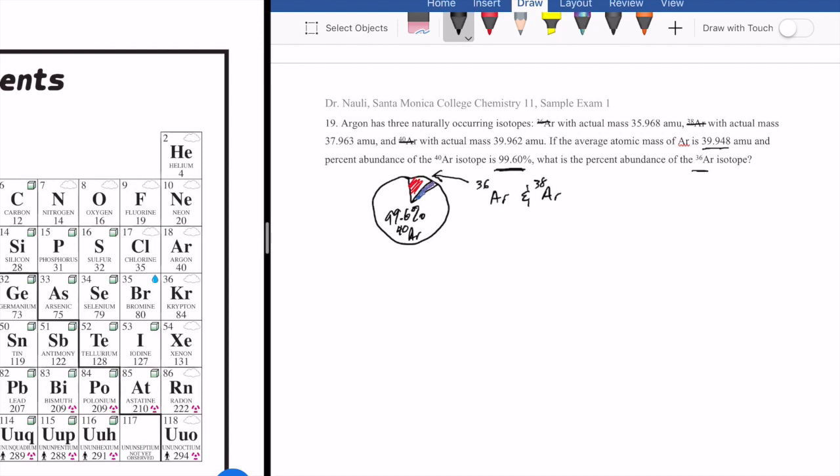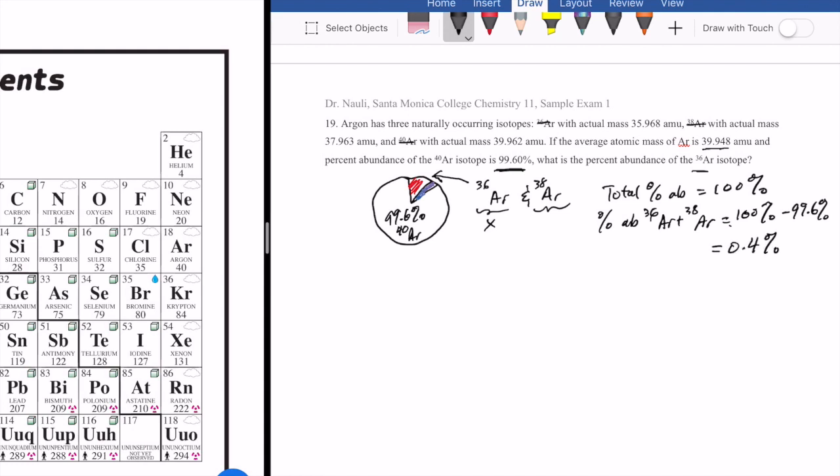And then the other two makes up both the argon 36 and 38. So here we're being asked to find the 36, so we can say that since I don't know either one, I'm gonna let this one be x, then I have to think about what this one would be. Well, remember that the total percent abundance has to equal 100%. Since we know that that's the sum of all three percent abundance, 36, 38, and 40, we already know that the 40 is 99.6. So then the percent abundance of 36 plus 38 should equal 100% minus 99.6%, which is just 0.4%. So this is these two.